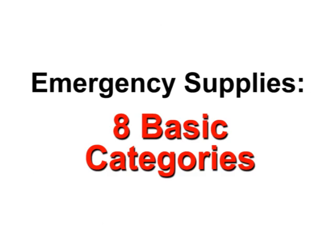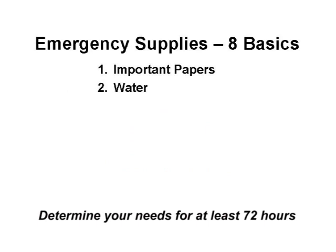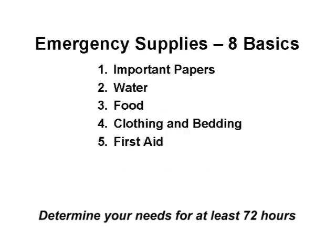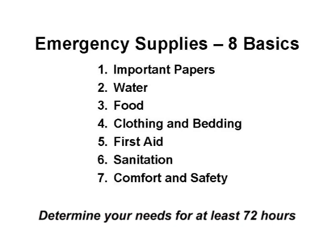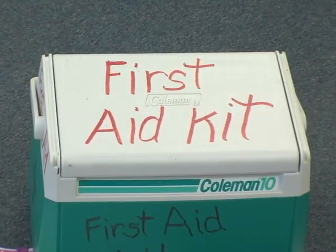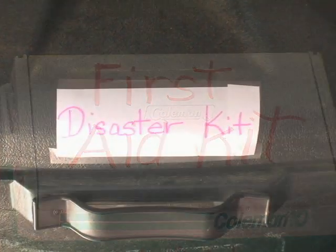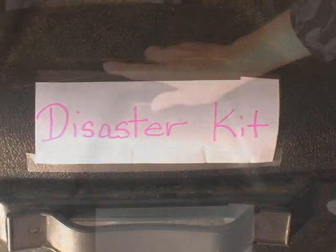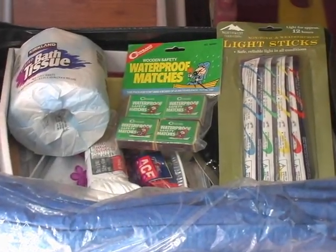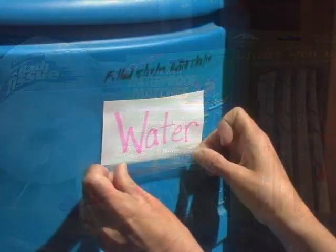When determining what you need in your emergency supplies, think in eight basic categories: important papers, water, food, clothing and bedding, first aid, sanitation, comfort and safety, and communication. You will want to have a first aid kit and an emergency disaster kit for your program. Here are examples — you can find a list of items in your workbook.